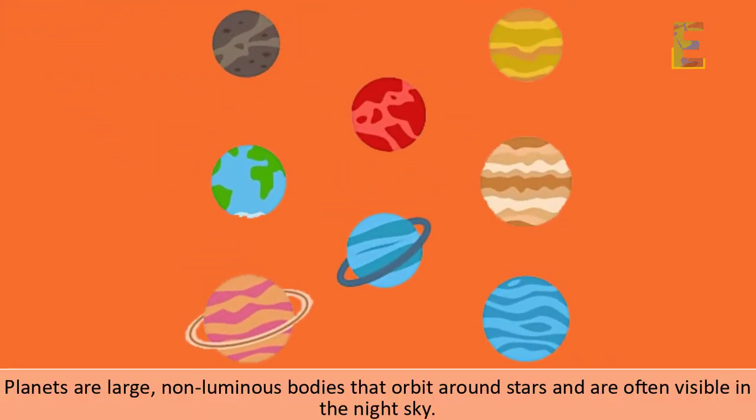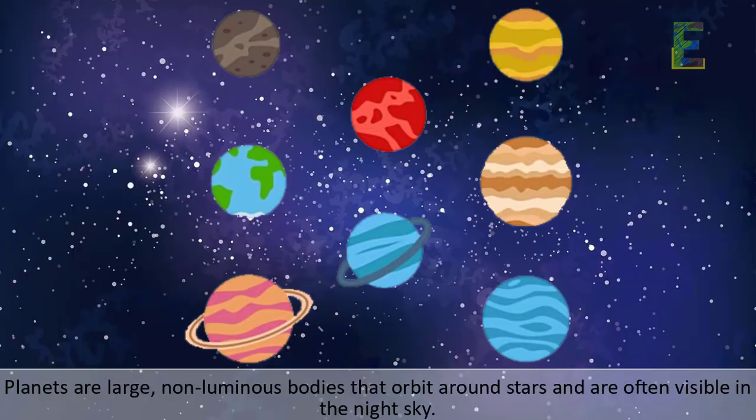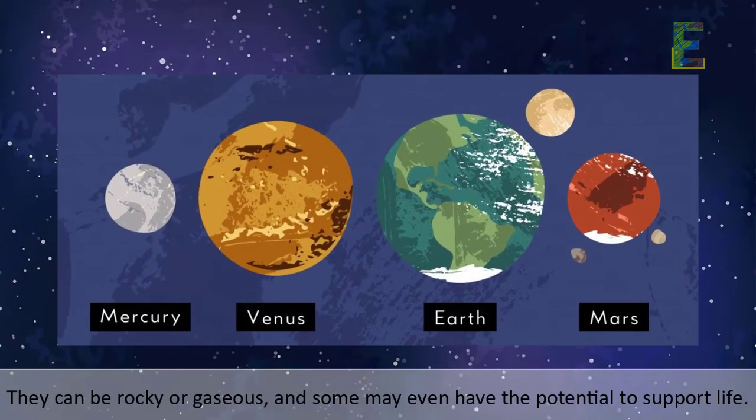Planets are large, non-luminous bodies that orbit around stars and are often visible in the night sky. They can be rocky or gaseous, and some may even have the potential to support life.